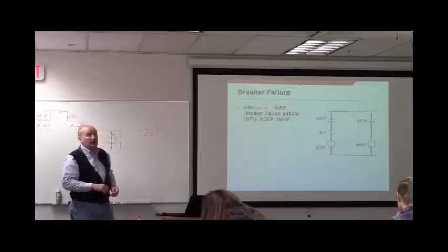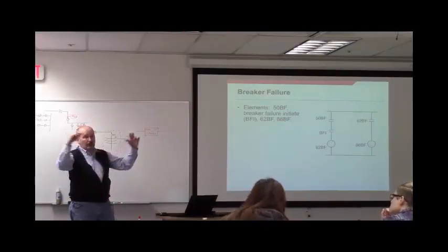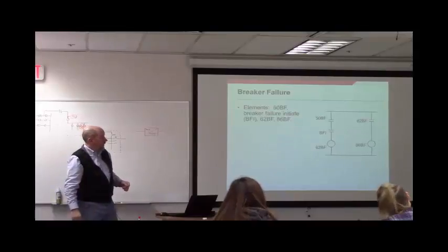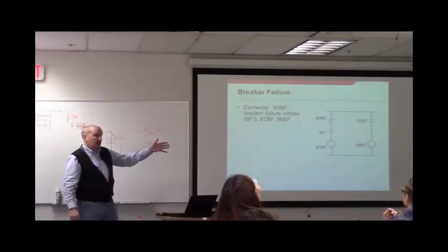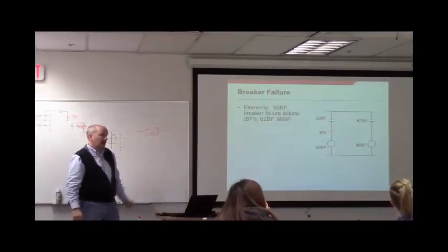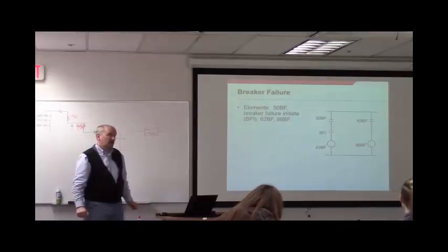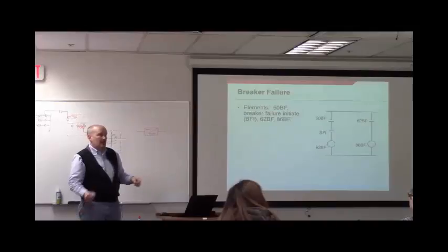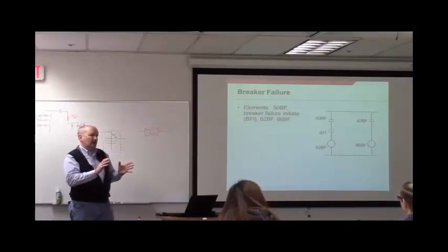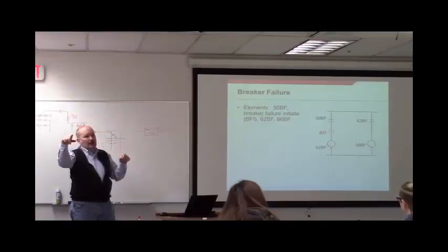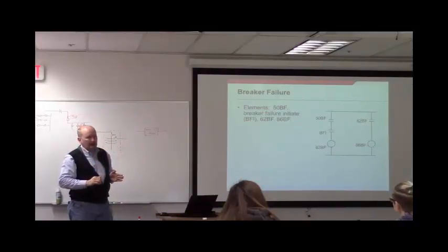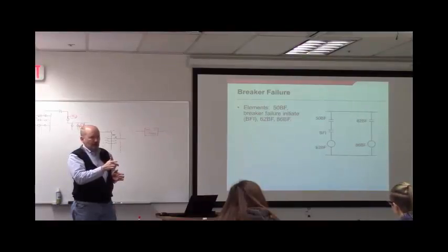If the timer times out, you close that contact and trip a lockout relay — that's when you clean house and trip all adjacent breakers. Implicit in this is that the 50BF will drop out at the exact instant fault current stops going through the breaker. It's not going to pick up and stay on a few more cycles — it comes up and drops right back out as soon as the fault is cleared.